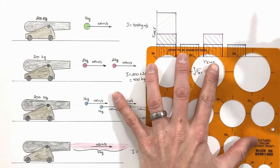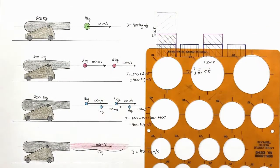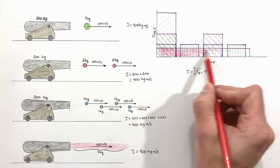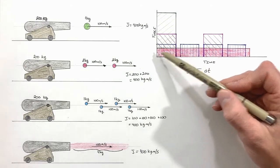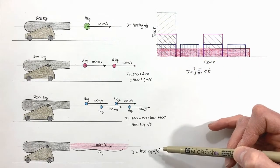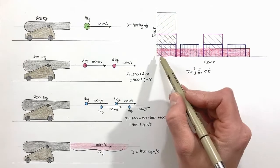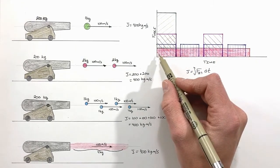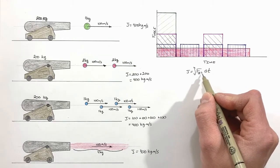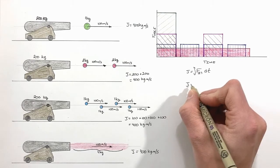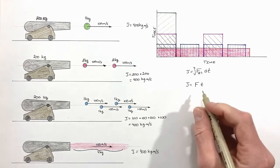What would that look like on our graph? It would look like a steady line — a constant force. The total area under the curve is still 400 kilogram meters per second. With this constant force, we can simplify how we look at impulse: rather than the integral of F(t) dt, we can say impulse is simply force multiplied by the time over which that force is applied.